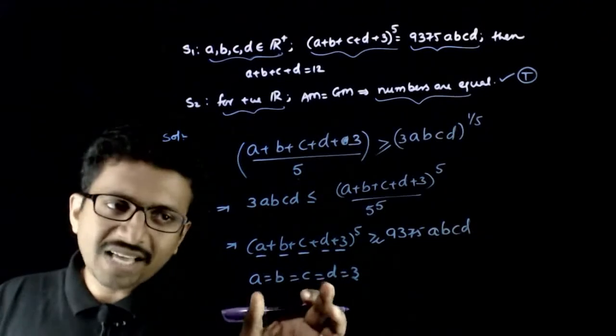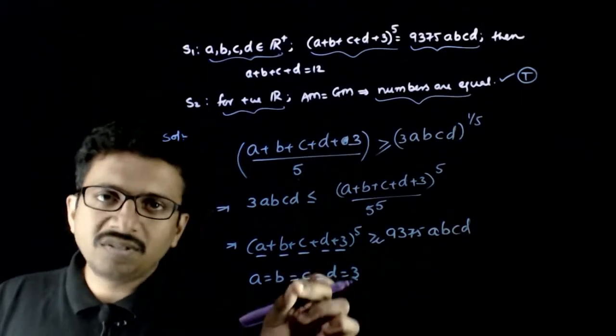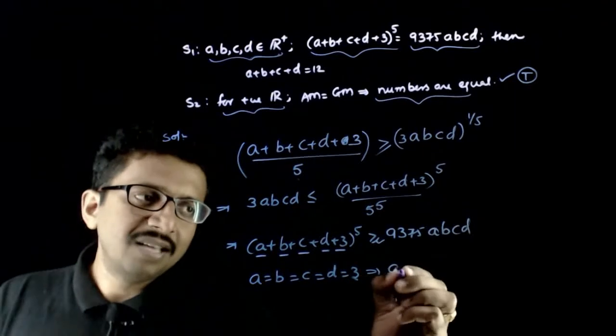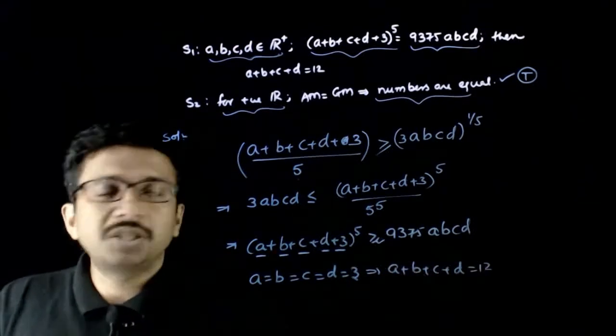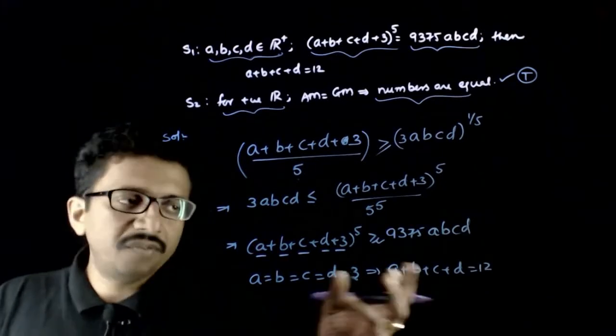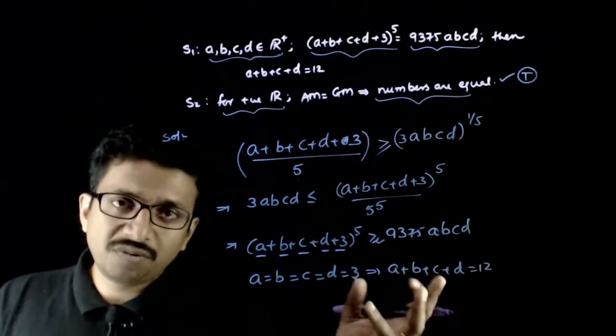And in this case if a is equal to b is equal to c is equal to d is equal to 3, this implies a plus b plus c plus d will be equal to 12. If a plus b plus c plus d is equal to 12.